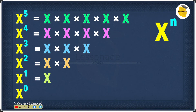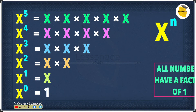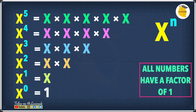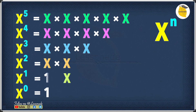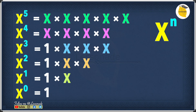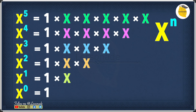Going back to the pattern, the next thing to find is x to the power of 0. You might think multiplying 0 x's means the answer is 0, but x to the power of 0 is actually 1. The reason is that all numbers have a factor of 1, so we can write x to the power of 1 as 1 times x, x squared as 1 times x times x, and so on. As the number of x's decreases to zero, we are left with just the 1.